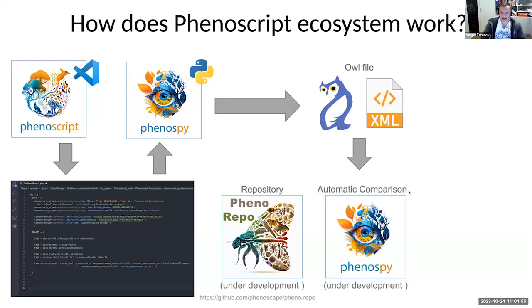Another application possible with the OWL file is to use the Phenospy package to compare your species and phenotypes automatically. Some methods are already developed for that, but a lot more methods still need to be developed. This package is currently under development with some available functionality already.